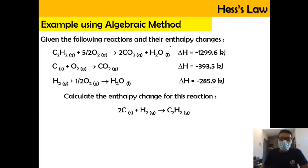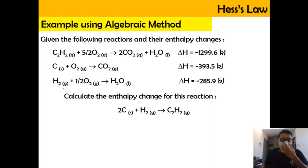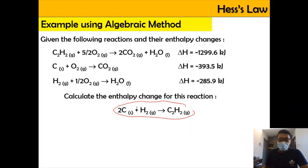We're going to focus on the algebraic method first. Given the following reactions: equation 1 — C₂H₂ reacting with oxygen forms 2 mol CO₂ and water, ΔH = −1299.6 kJ; equation 2 — carbon reacting with oxygen produces 1 mol CO₂, ΔH = −393.5 kJ; equation 3 — hydrogen reacting with oxygen forms 1 mol H₂O, ΔH = −285.9 kJ. We need to calculate ΔH for: 2C + H₂ → C₂H₂.